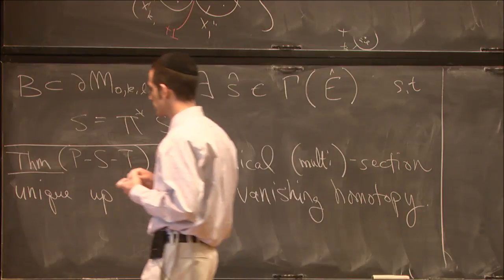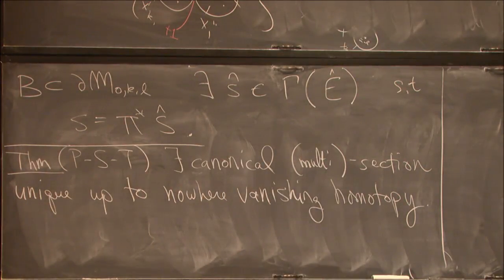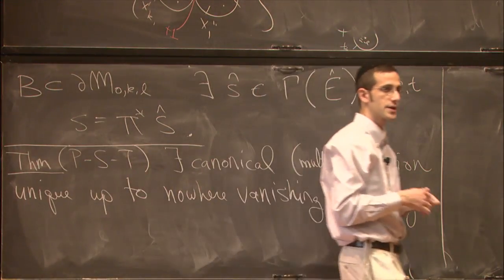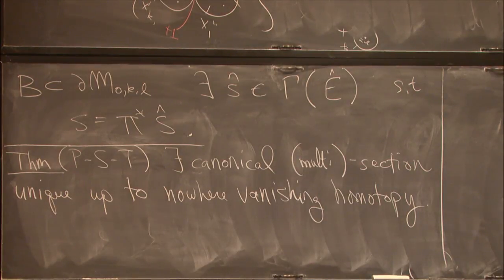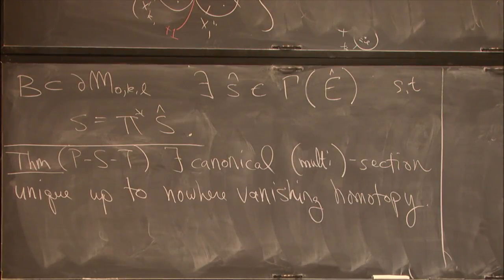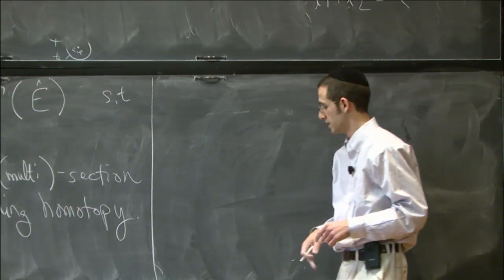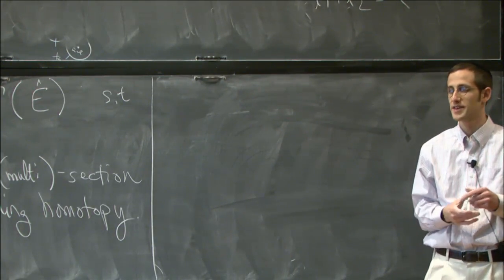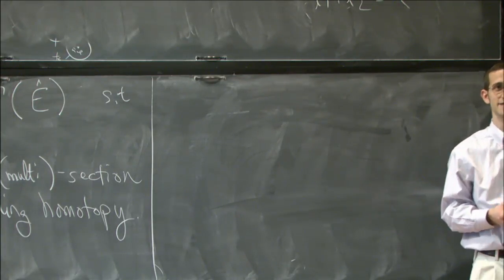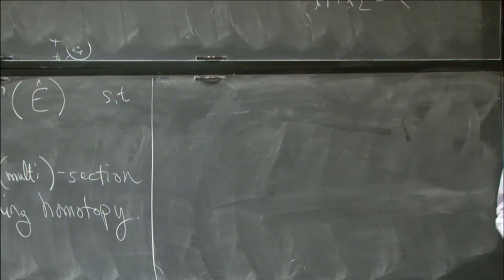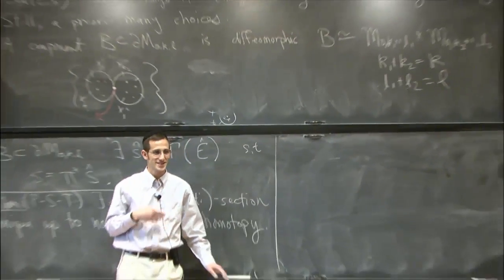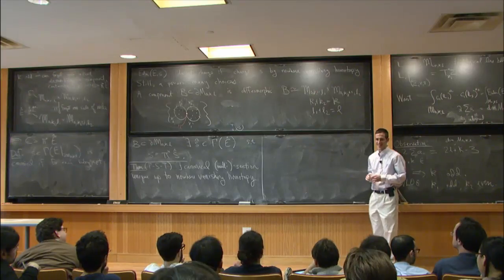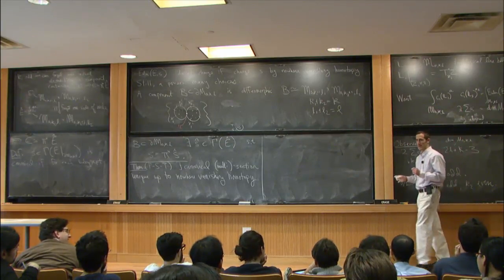The boundary decomposes further inductively: you have to start from the lowest-dimensional stratum and work up stratum by stratum, inductively constructing this multi-section. This is genuinely hard, and currently the only way we can do it is using techniques from the book of Helmut developed for polyfold theory — extending multi-sections from the boundary of a manifold with corners is nontrivial.